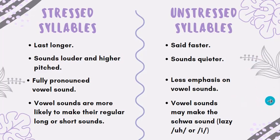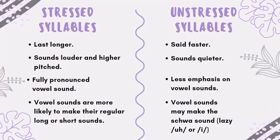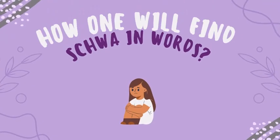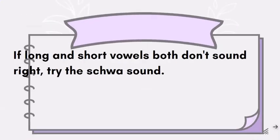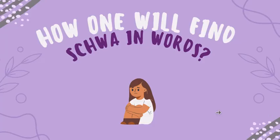Now let's summarize the stressed and unstressed syllable. You can pause the video here, take a screenshot, and read it yourself. Now if you've understood what schwa is, the next challenge is to find schwa in words — how kids will identify where schwa is in a new word. Remember, we cannot teach schwa to young kids. They should be at least in grade two and should know how to break words into syllables. Then only should you go for the schwa sound.